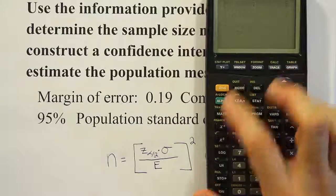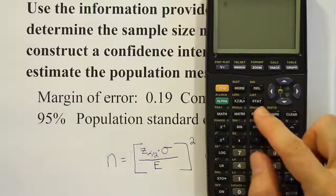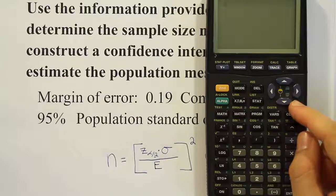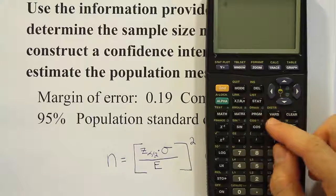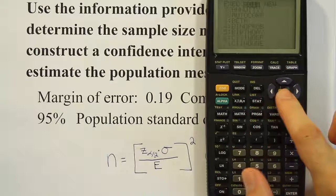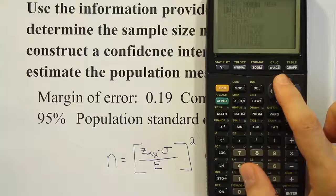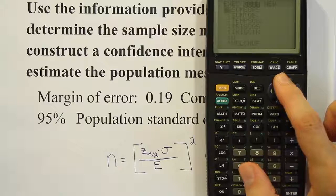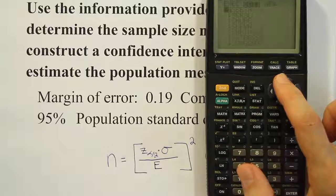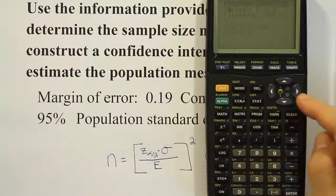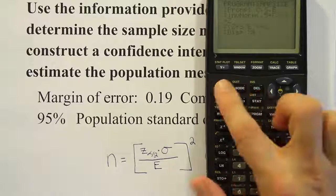I'll quit out with 2nd QUIT. One thing to know: if you exit the program accidentally and return to the regular screen, to edit your program just press the program menu, go to "edit," and scroll through to find your program. Mine is in alphabetical order under S's — I find SAMPSIZE and press enter to go back in and change anything I need.